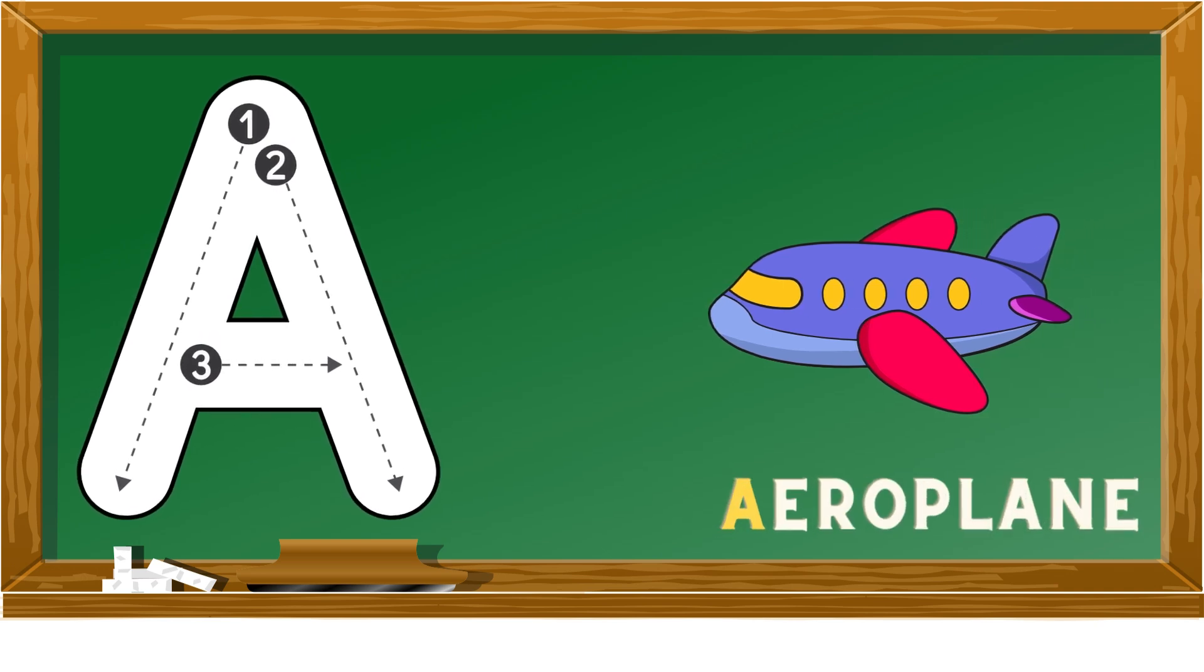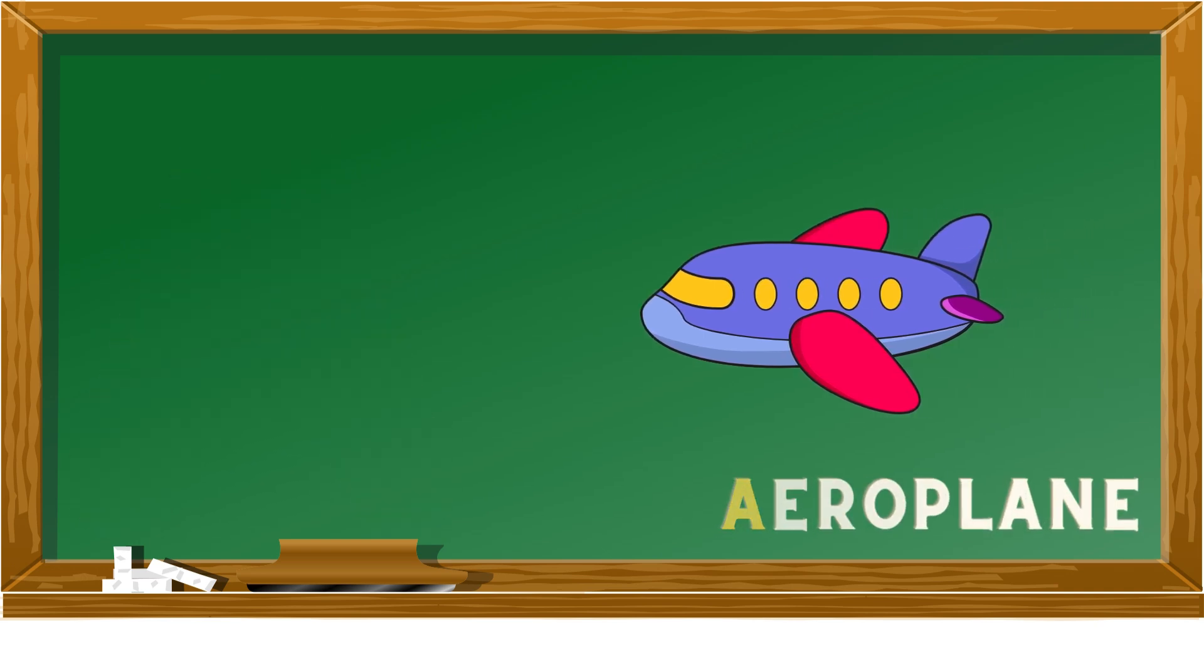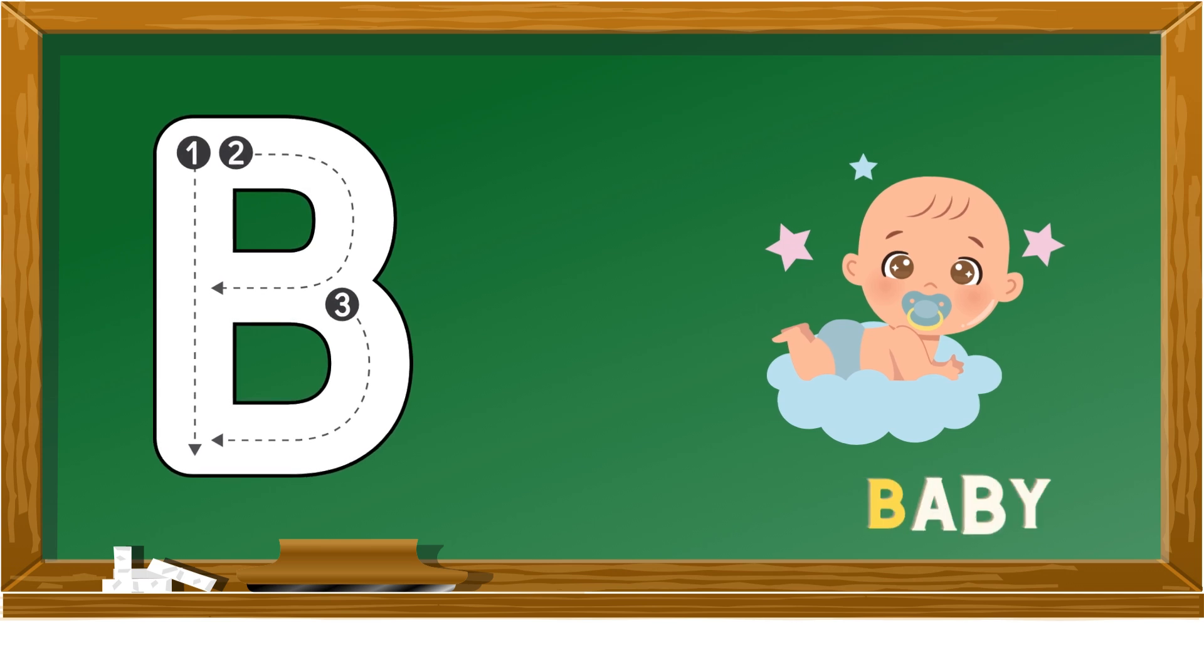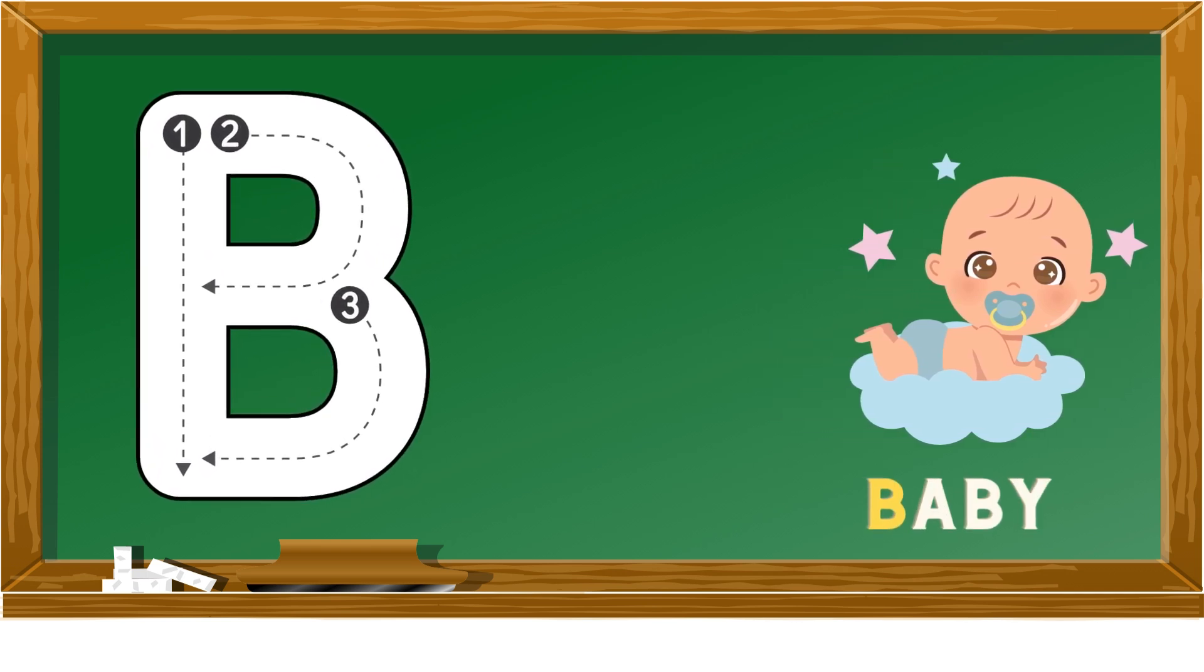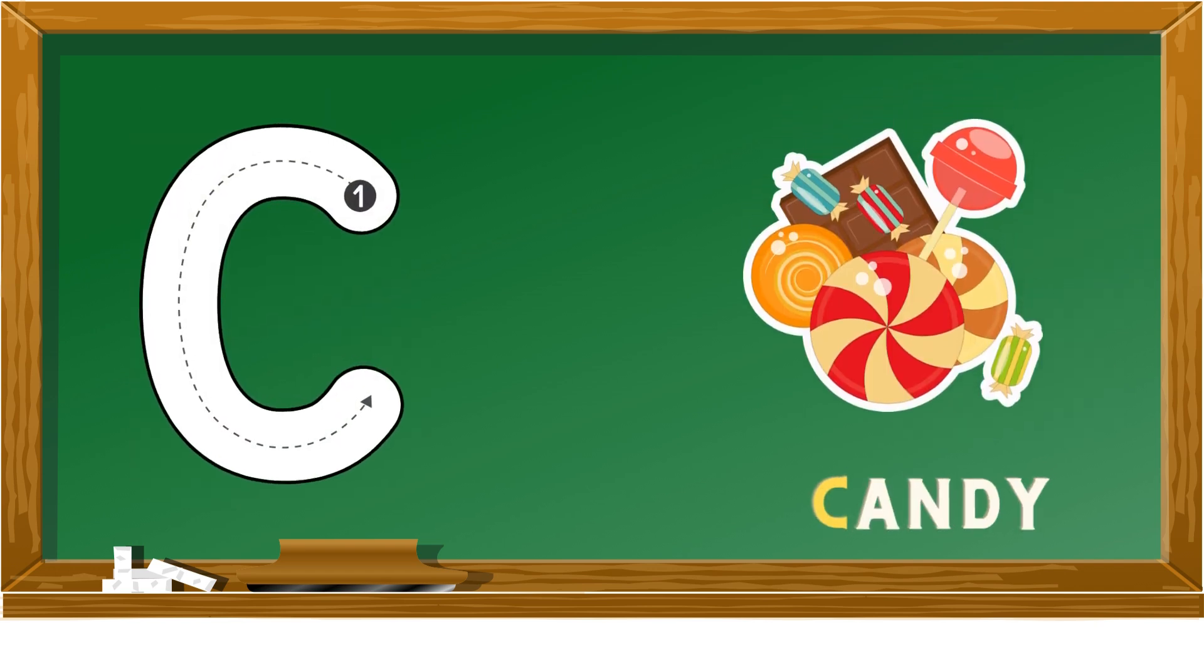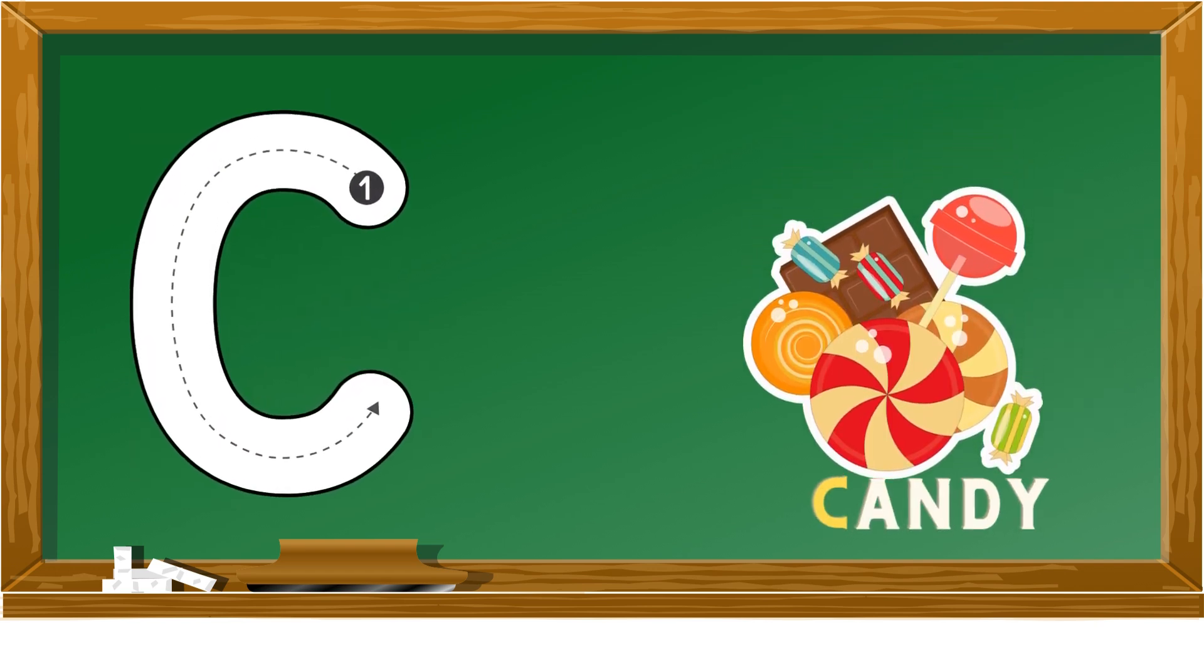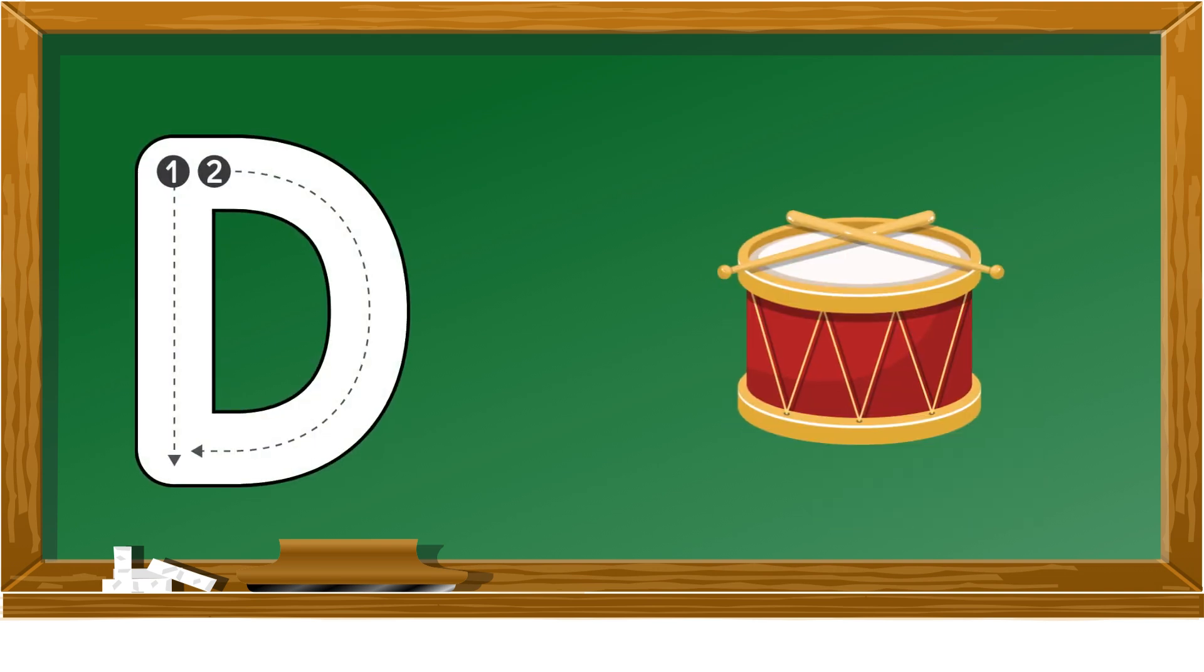A is for aeroplane, B is for baby, C is for candy, D is for drum.